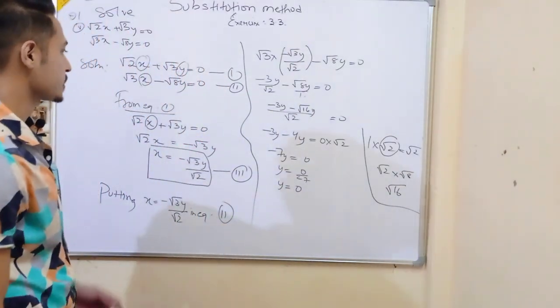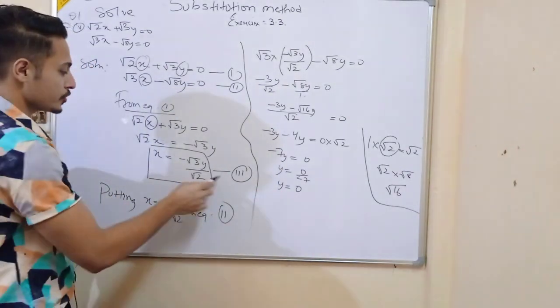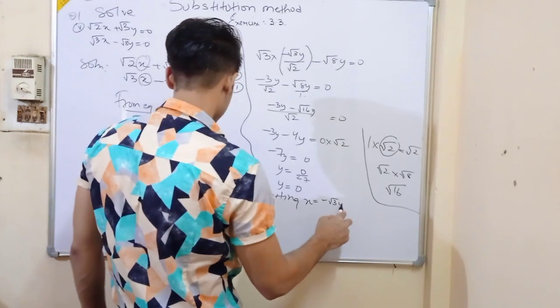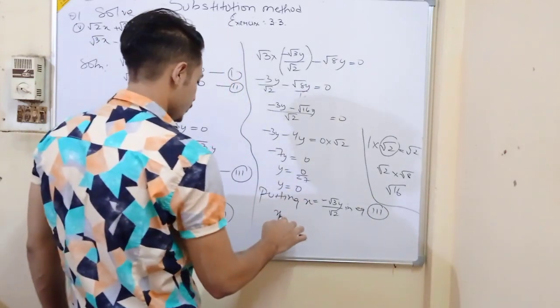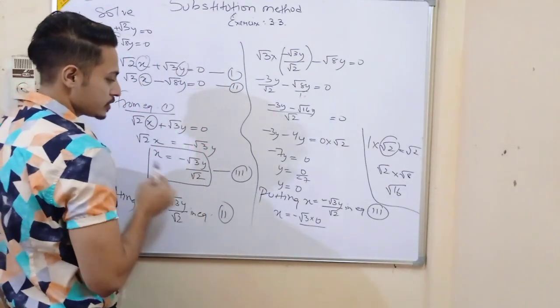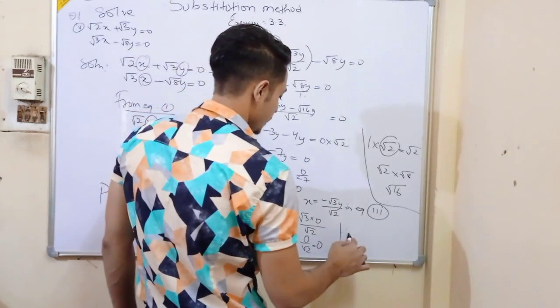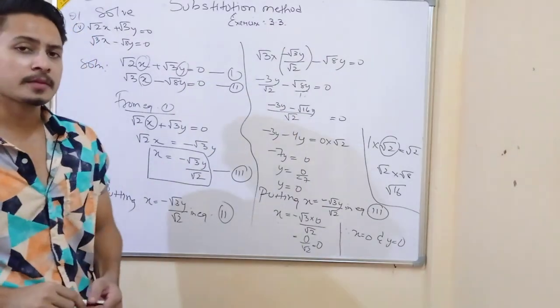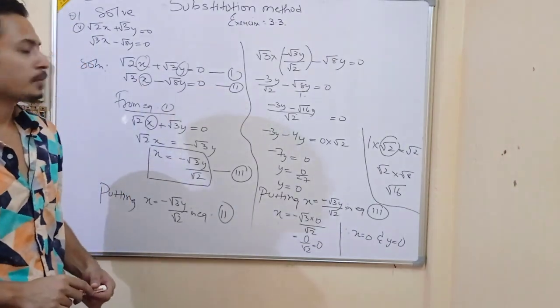So y value we have. Now we need to find x value because we need to find two variables, right? So we'll put this value in equation 3 because equation 3 has x value. So putting x equal to minus root 3y by root 2 in equation 3. x is equal to minus root 3 into 0 by root 2, because y value is 0. That means substitute. So 0 by root 2 equals 0. So x equals 0 and y equals 0. Clear? So it's not that hard, it's simple.